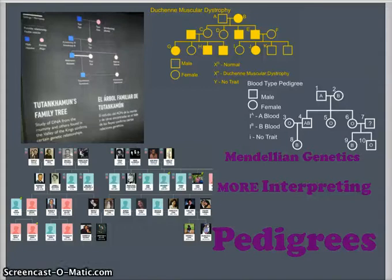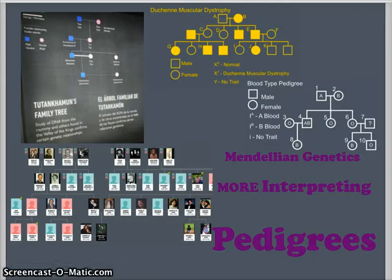Welcome back. We're going to continue with Mendelian Genetics and do a little more interpreting of pedigrees. In this video we're going to focus on a blood type pedigree and then a sex-linked gene pedigree. So let's begin with the blood type pedigree.